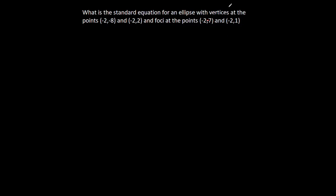I want to break this problem down first. The way I like to do this is to look at what information we're given and what it's telling us. We have vertices and foci. Whenever you see a vertex, you know you're dealing with some sort of A parameter. And whenever you see foci, you know you're dealing with some sort of C parameter.